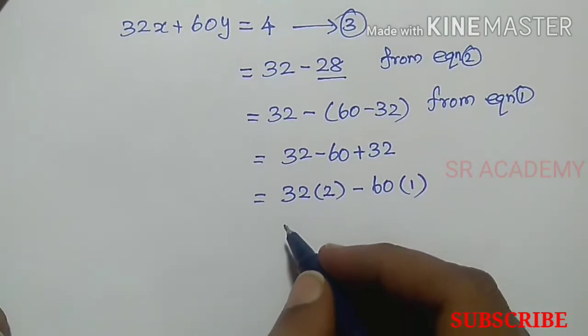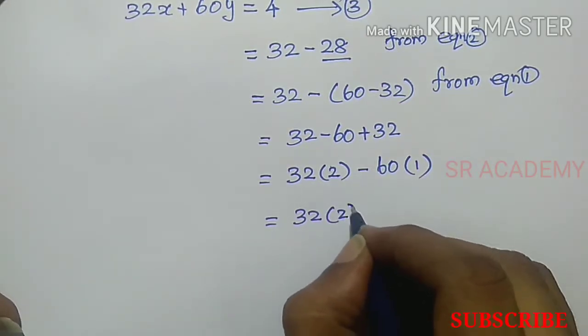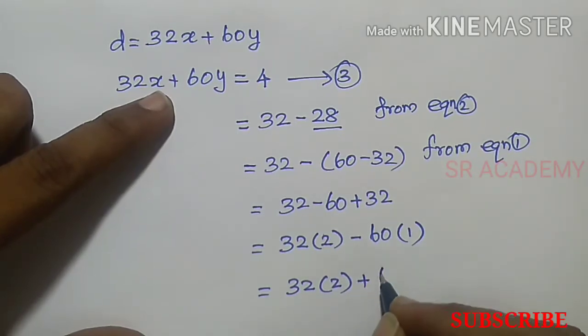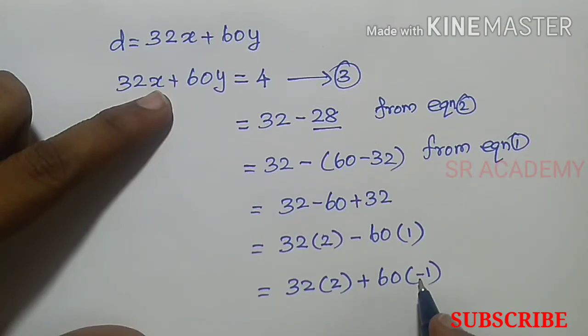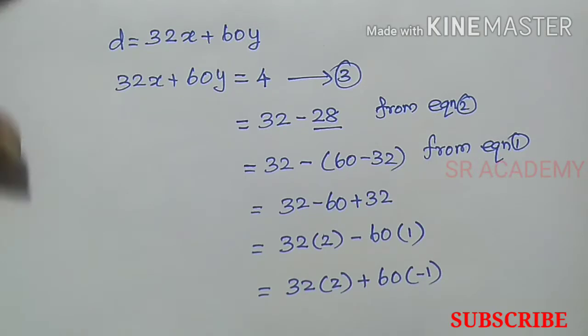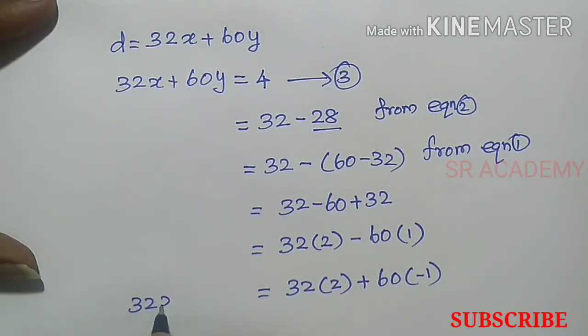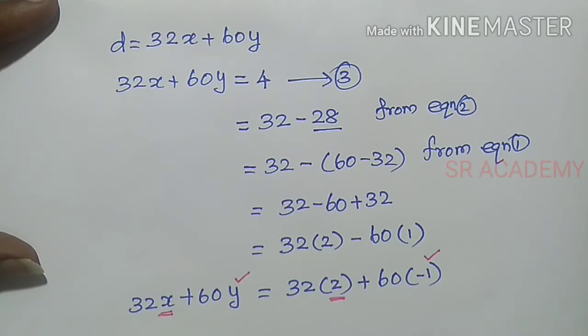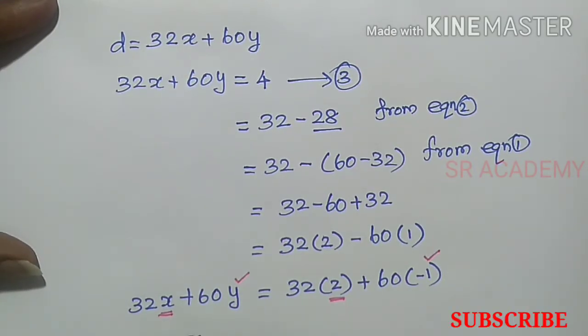This equals 32 into 2 plus 60 into minus 1. Therefore, X equals 2 and Y equals minus 1.